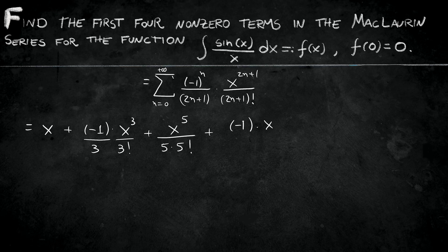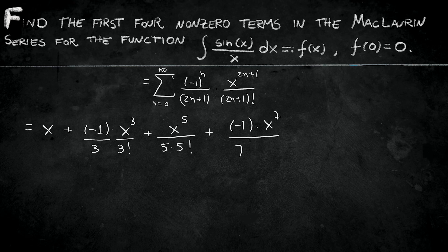Proceeding that way, we can find the next term. That's going to be minus 1 times x to the power 2 times x to the power 7 over 7 times 7 factorial. Great. It means my first